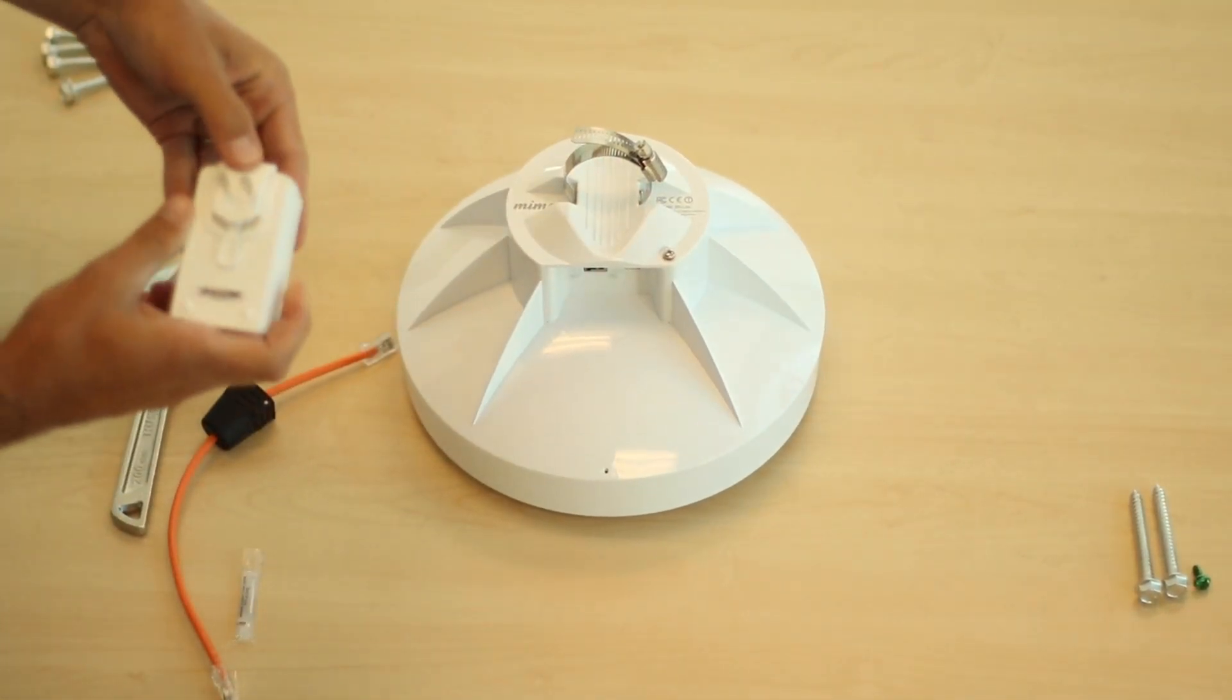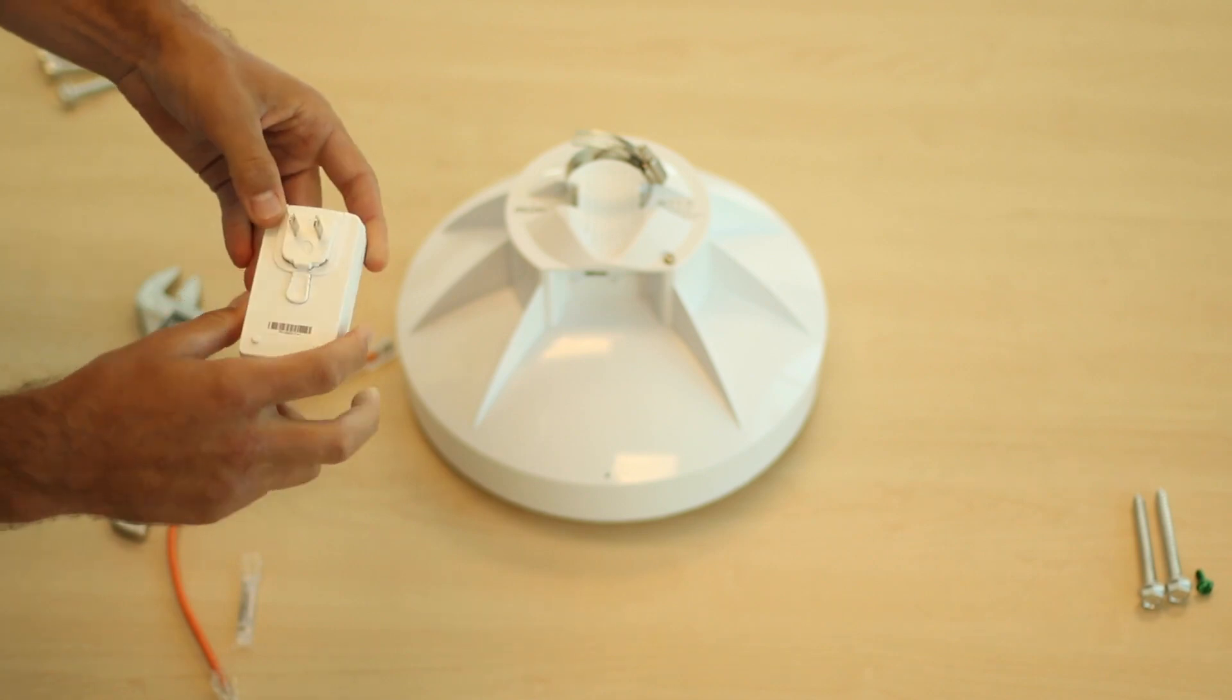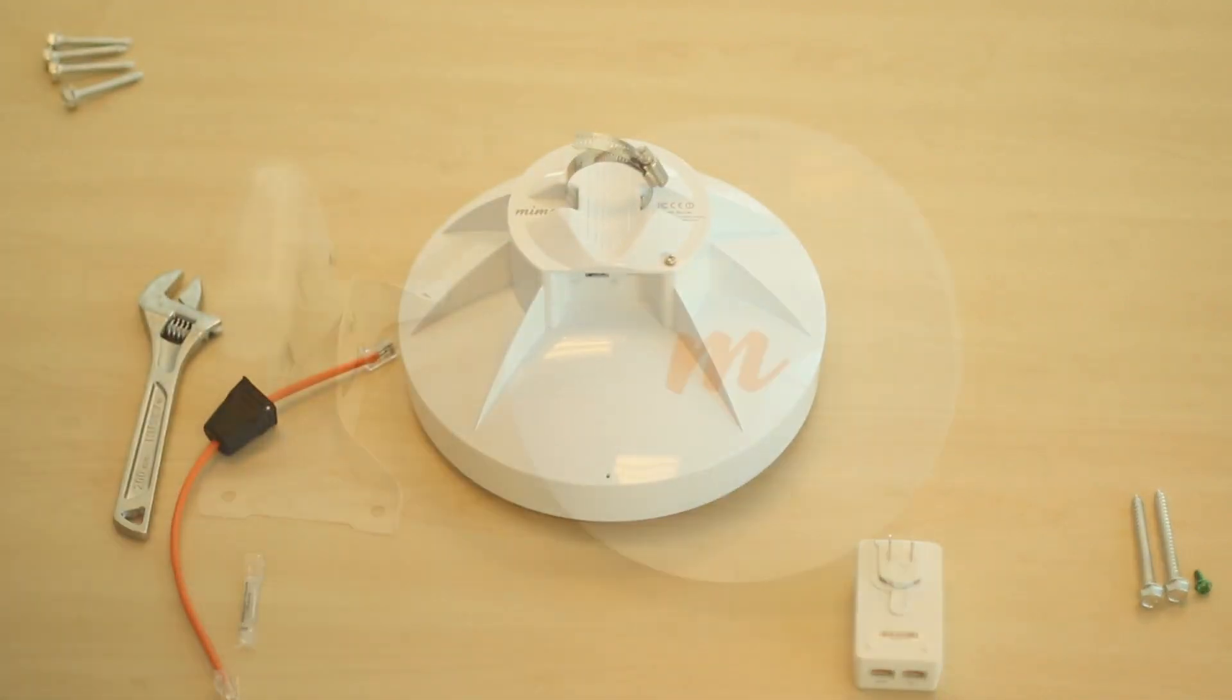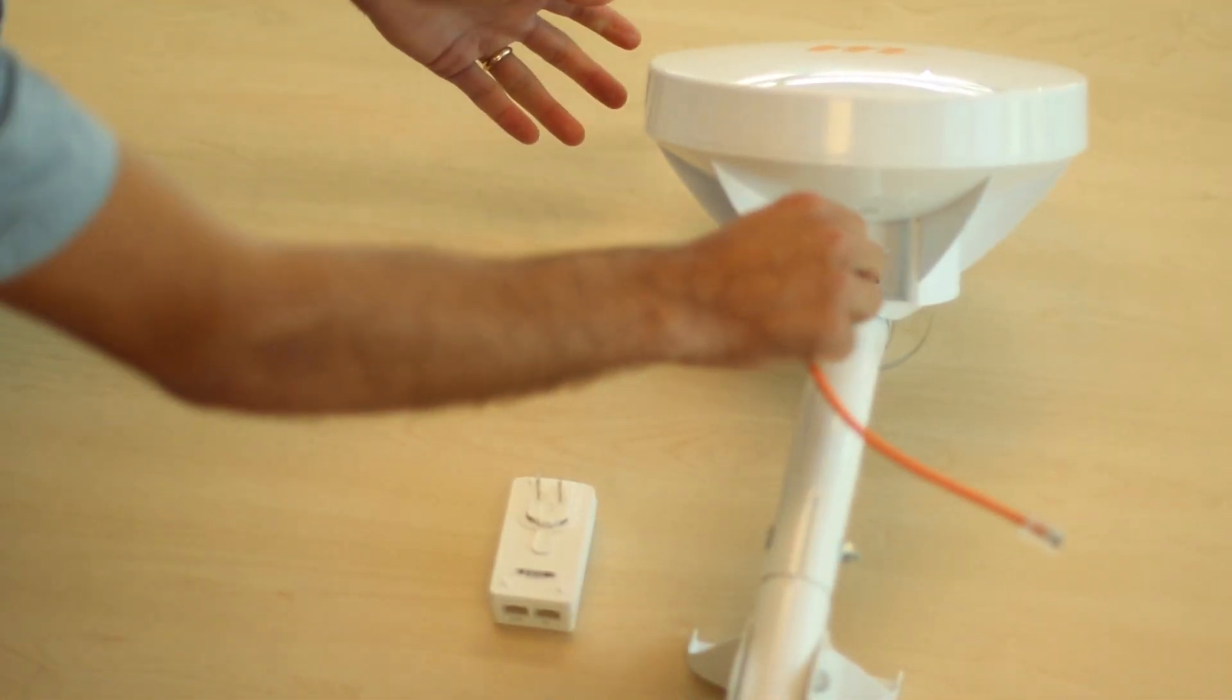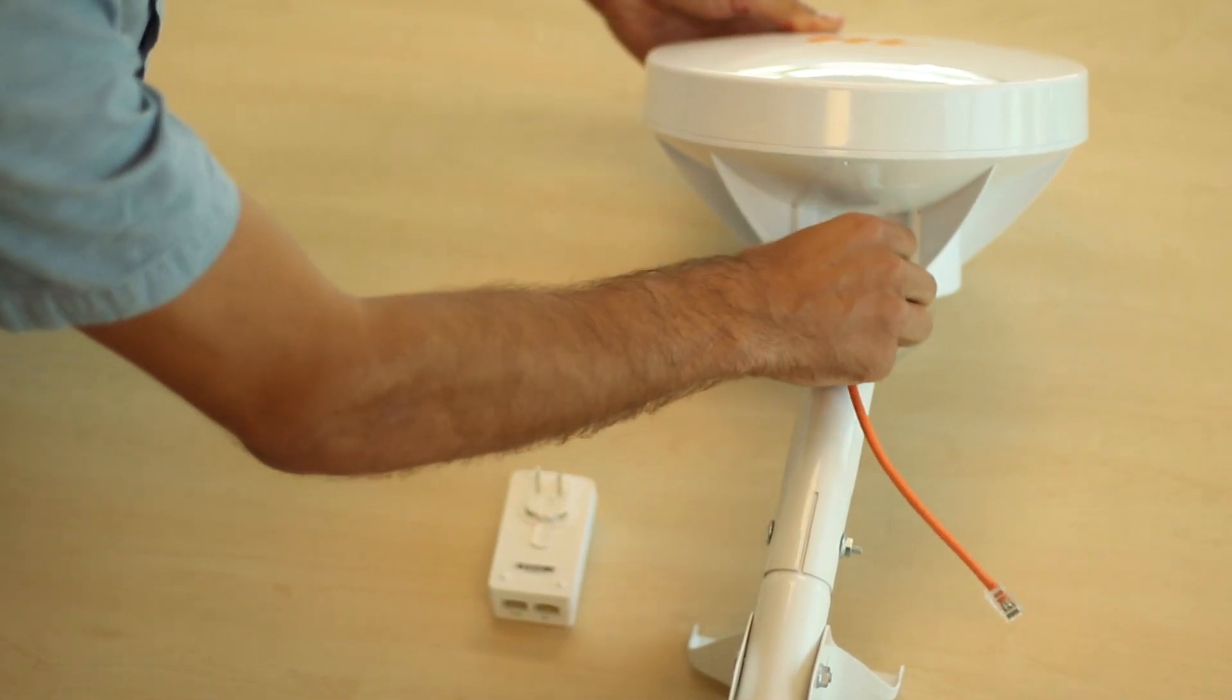Snap the country-specific plug adapter into the power supply. Attach the radio onto the mount. Connect the other end of the Ethernet cable into the power supply in the port labeled Data plus Power, and plug the power supply in.